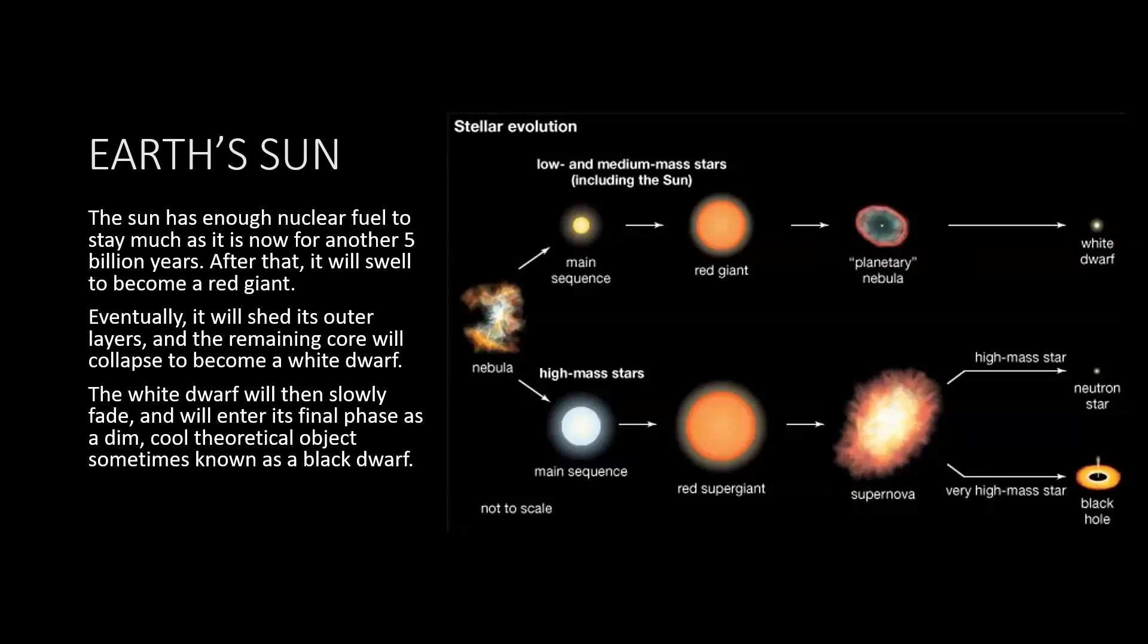The Sun itself has enough nuclear fuel to stay much as it is now for another 5 billion years. After that, it will swell to become a red giant. So the Sun will be around for another 5 billion years, so we don't have too much to worry about that. However, whether the Earth survives for that length of time depends on what humans do and how humans work. Eventually the Sun will shed its outer layers and the remaining core will collapse to become a white dwarf. The white dwarf will then slowly fade and will enter its final phase as a dim, cool, theoretical object, sometimes known as a black dwarf.